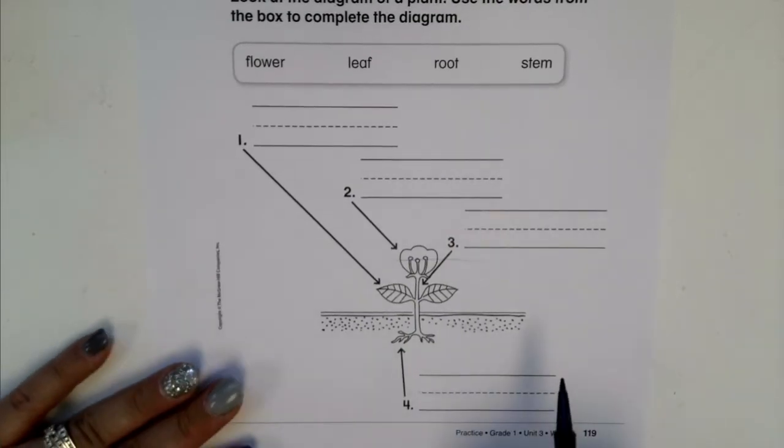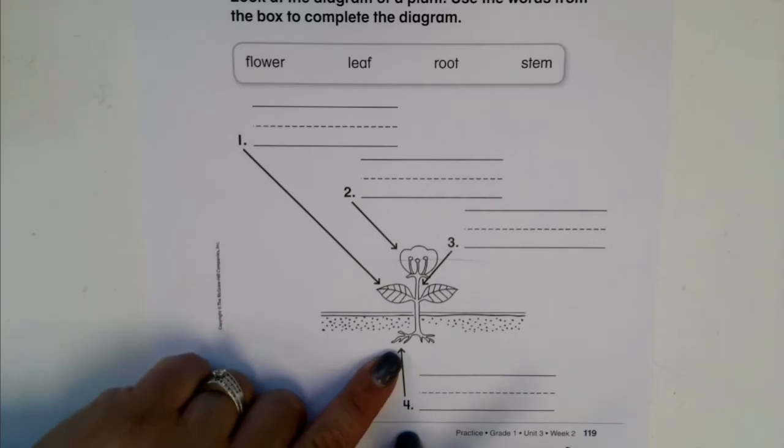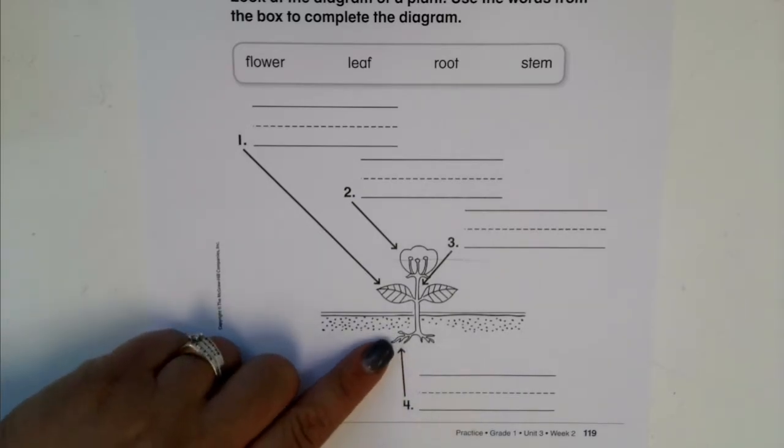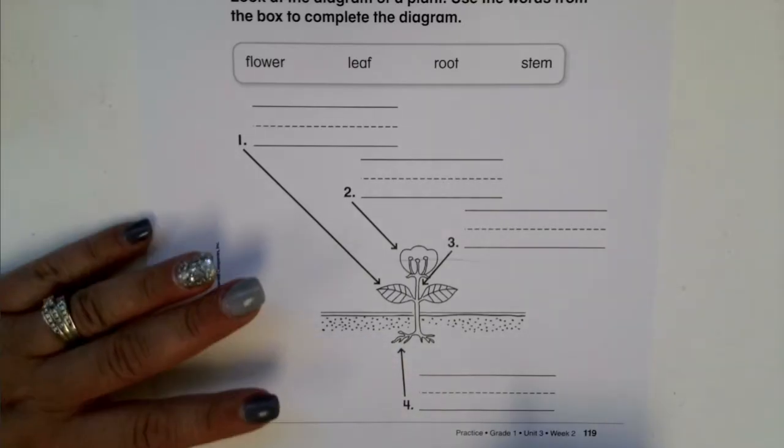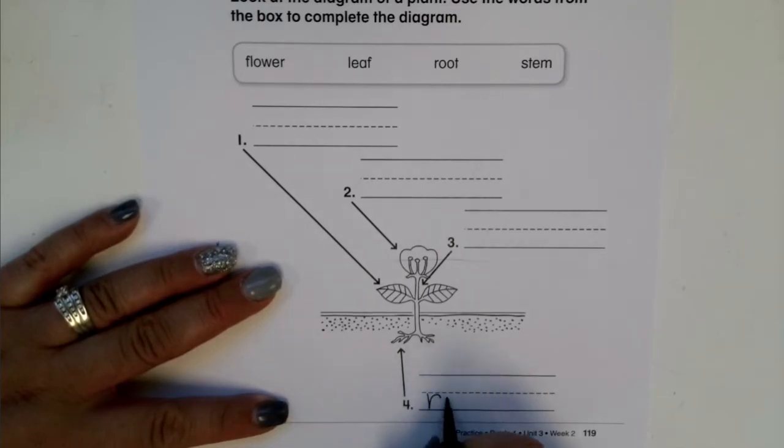Why don't we start down here at the bottom. Is this a flower, a leaf, a root, or a stem? Right, that's the root. The root goes in the ground.